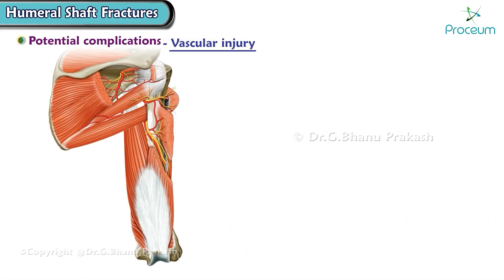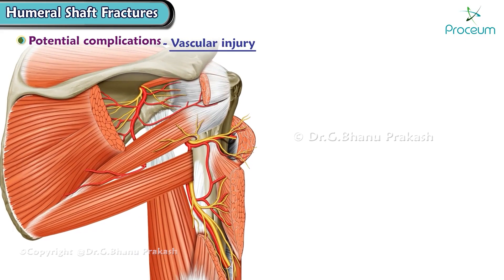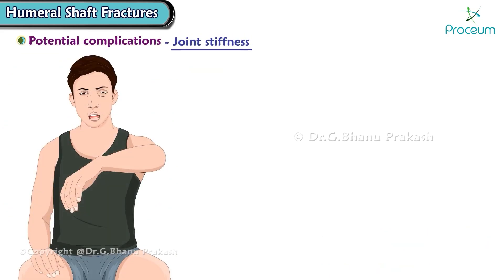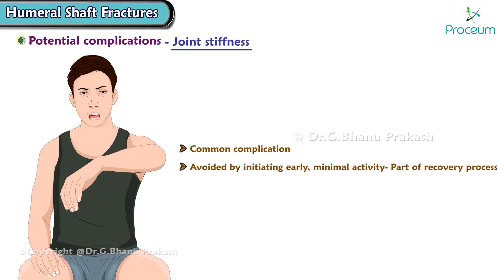Involvement of the profunda brachii artery should be assessed and monitored, especially in cases where limb ischemia is suspected. Angiography can help evaluate any suspected vascular injury. Joint stiffness is a common complication in patients with humerus shaft fractures and can often be avoided by initiating early minimal activity as part of the patient's recovery process.